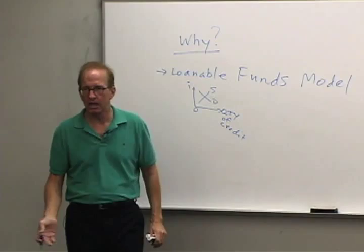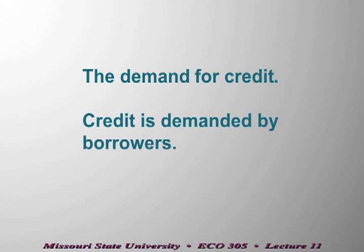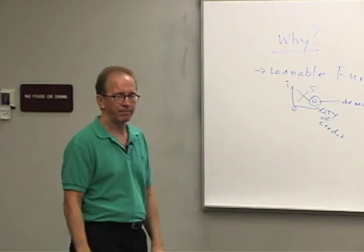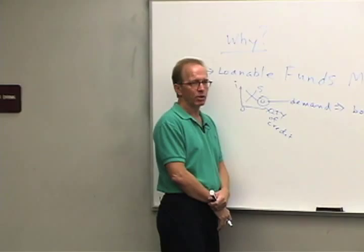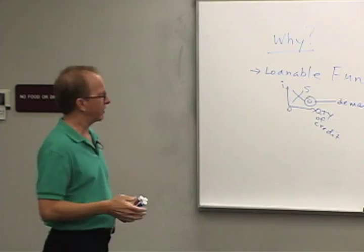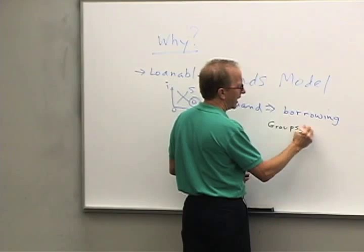There are a lot of details to understand. First, let's talk about the demand for credit, which also refers to borrowing. The people who demand credit or need credit are borrowers. If we said who borrows, the answer is pretty much everybody. So what we want to do when we talk about the demand for credit is focus on the groups that are net borrowers.